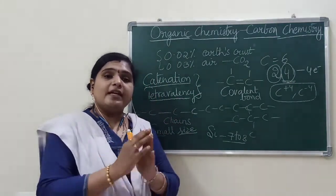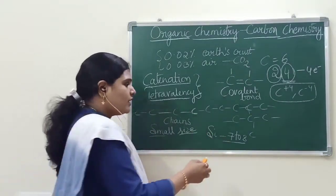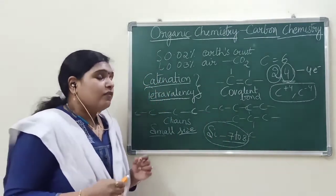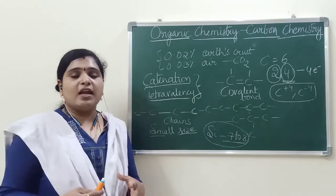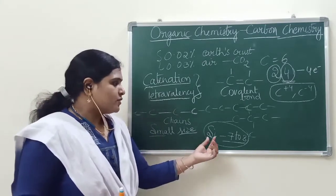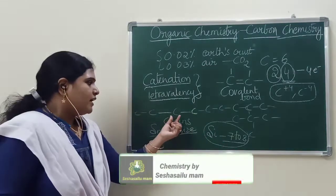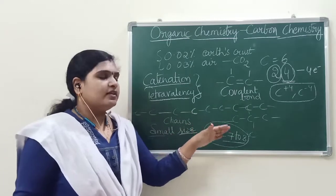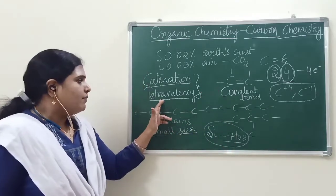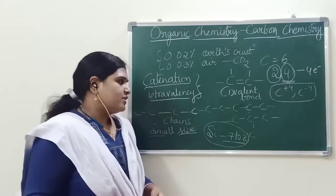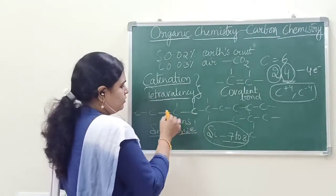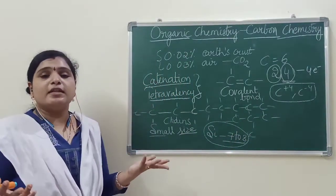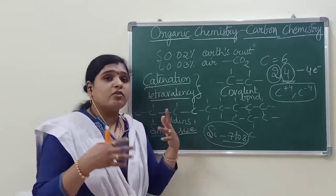Like that it can form, but it cannot form more than that, because whatever the compounds that are formed by this are very reactive. They are not stable because of size you can say. Here the size is optimum and they can form large, large chains which may be straight, which may be branch. And coming to tetravalency, we have seen four, it can form four bonds.